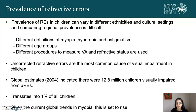The prevalence of refractive errors in children can vary across ethnicities and cultural settings, and comparing regional prevalences is very difficult because different definitions of myopia, hyperopia, and astigmatism are used, studies are done in different age groups, and different procedures are used to measure visual acuity and refractive error status. However, uncorrected refractive errors are the most common cause of visual impairment in children. Global estimates indicate about 12.8 million children are visually impaired from uncorrected refractive errors — approximately 1% of all children — and given current global trends in myopia, this is set to rise.